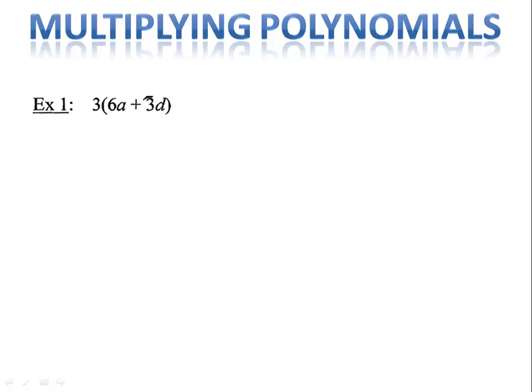In our first example, we have 3 times 6a plus 3d. We simply use the distributive property. First we multiply the 3 by the 6a — 3 times 6 is 18a. Now we multiply the 3 times the 3d — 3 times 3 is 9d. So when we simplify this, we have 18a plus 9d. We call this process expanding, once we use the distributive property.